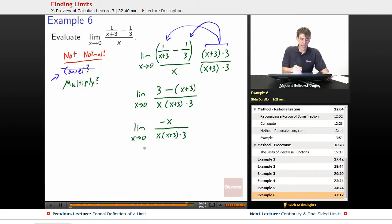Limit as x goes to 0 of negative x over x times x plus 3 times 3. At this point, we can cancel some stuff. This x and this x cancel and we're left over with the limit as x goes to 0 of negative 1, because it just canceled out the x, not also the negative, times x plus 3 times 3.